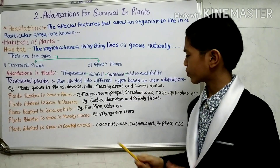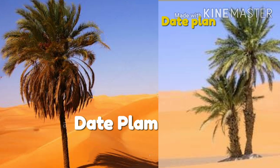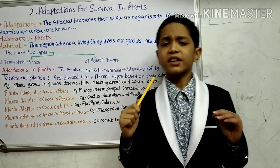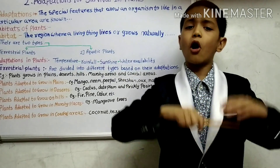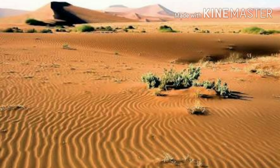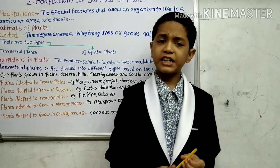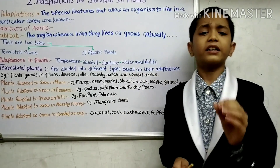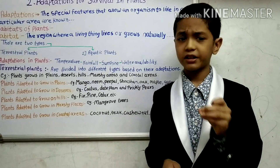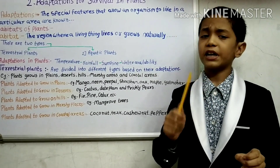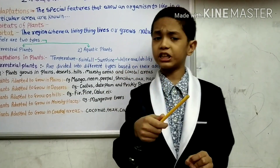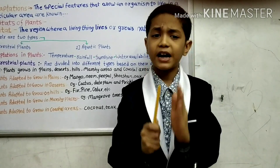In deserts, plants such as cactus, date palm, and prickly pear grow. The climate of the desert is hot and sandy with scarce water, but these plants have adapted themselves to live with the least amount of water. That is why the leaves are reduced to spines. The green stem of the cactus plant performs photosynthesis, makes food for the plant, and also stores water. The cactus plant has a long root system which grows deep into the ground.